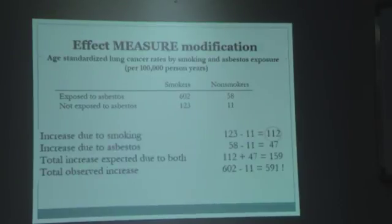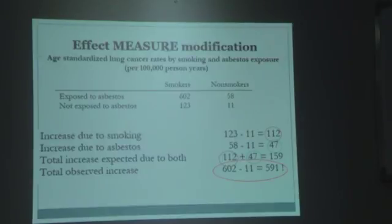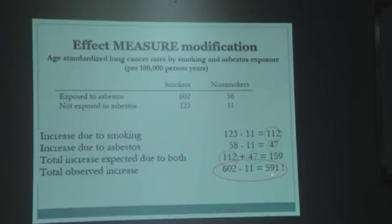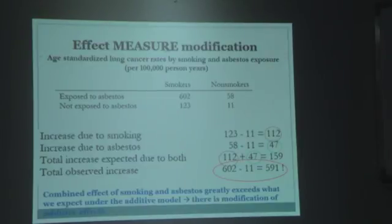This is the demonstration. Increase due to smoking: 112. Increase due to asbestos: 47. The expected joint risk on an additive scale would be 159—calculated by adding 112 plus 47. But in the presence of interaction, it triples and becomes 590. That means there is interaction on a multiplicative scale. The combined effect greatly exceeds what was expected on the additive scale of 159.